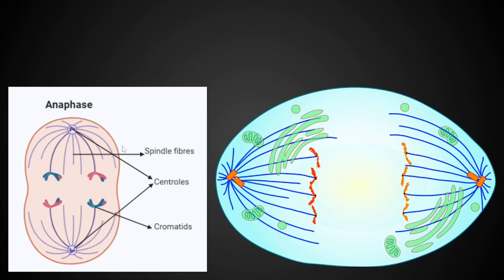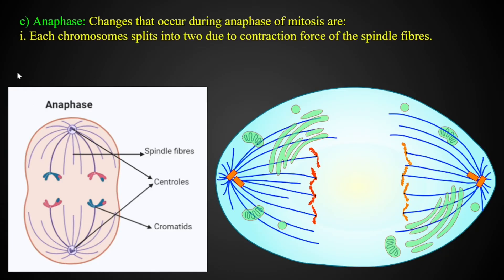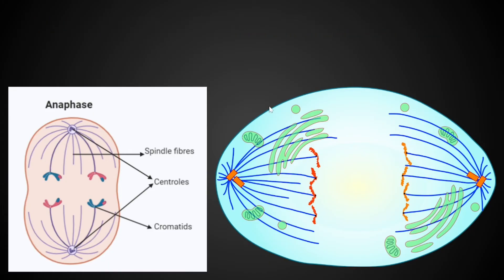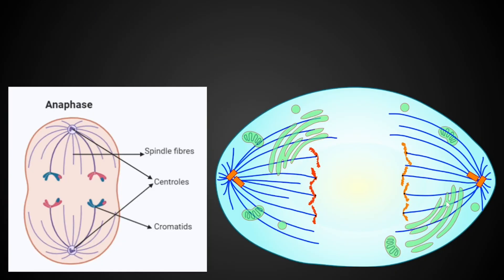Next is anaphase. In anaphase, each chromosome splits. The spindle fibers contract and the chromosome splits into two due to the contraction force of the spindle fibers.